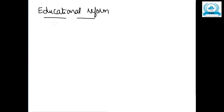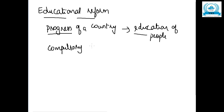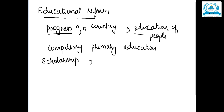The next reform of Sir M. Vishweshwaraya is educational reform. He believed that the progress of a country mainly depended on the education of its people. For that purpose, he introduced compulsory primary education and introduced scholarship programmes for socially and economically backward classes.